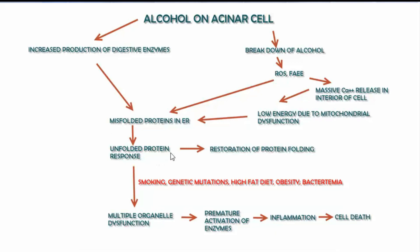This triggers a response known as the unfolded protein response, which is a protective response that protects the pancreas from the effects of alcohol. However, if this unfolded protein response is inhibited by exposure to environmental insults — such as cigarette smoke, certain medications, fatty acids, obesity, or bacterial toxins in the blood — this can cause a breakdown of this protective mechanism and lead to a malfunction of organelles in the cell. This then causes the activation of digestive enzymes within the pancreas itself, leading to inflammation, pancreatitis, necrosis, and death of the cells in the pancreas.